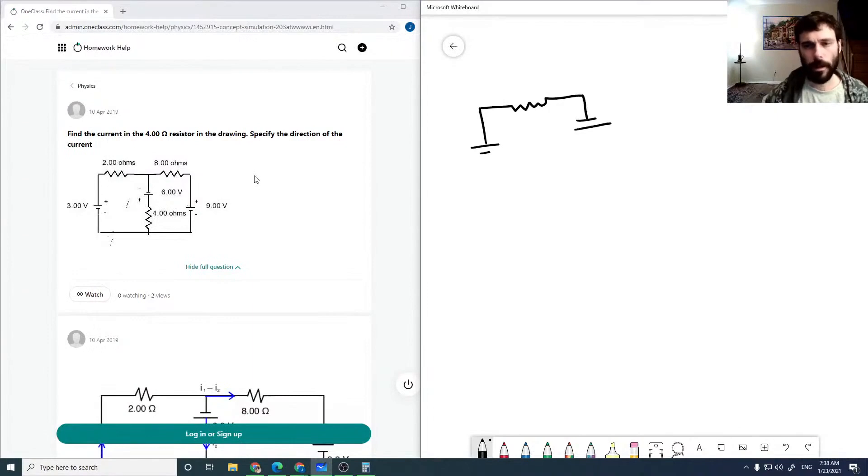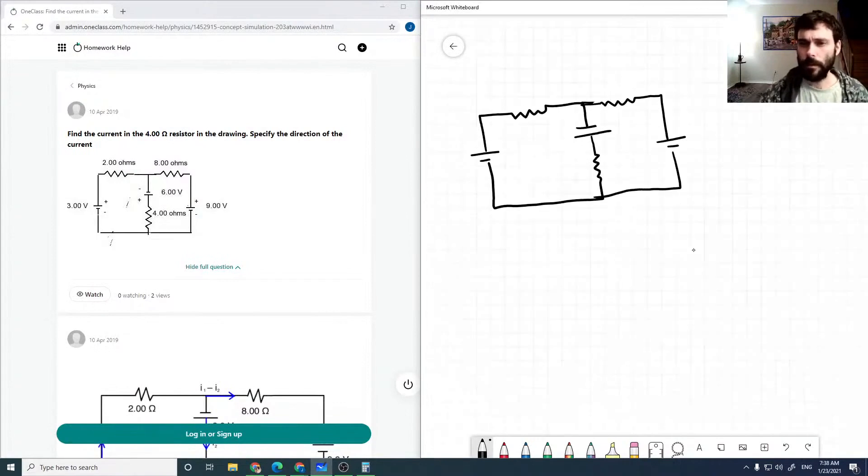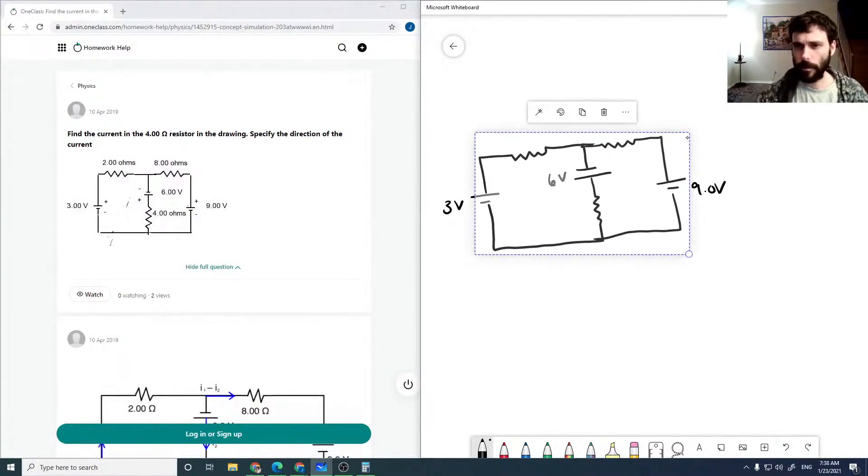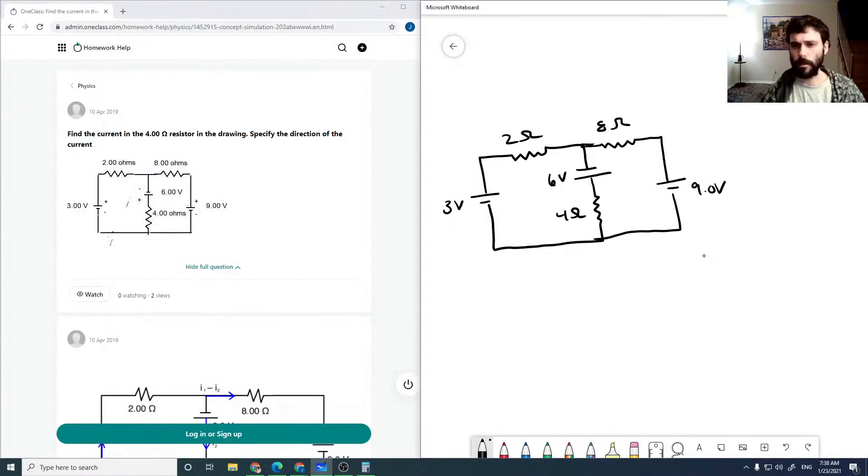And I'm going to just apply Kirchhoff's Loop Laws. And this battery is 3 volts, 6 volts, 9 volts. 2 ohms, 8 ohms, and 4 ohms. So this is the one that we're interested in.